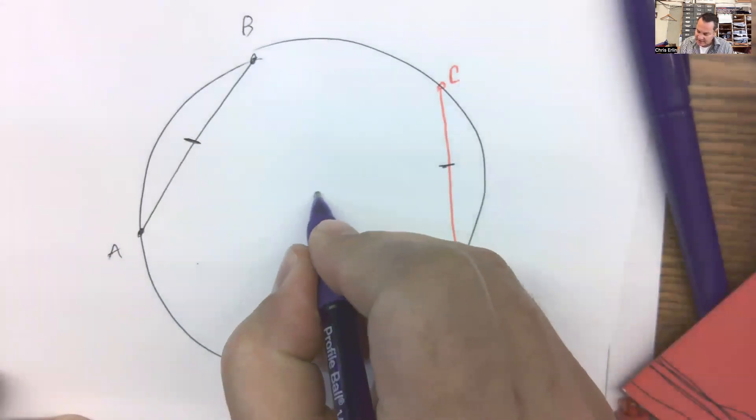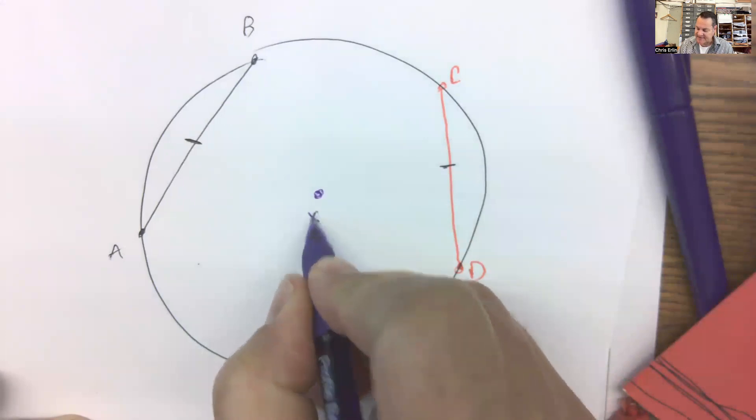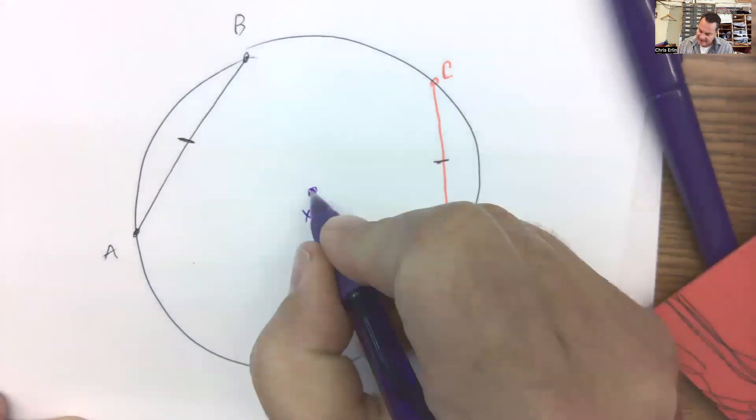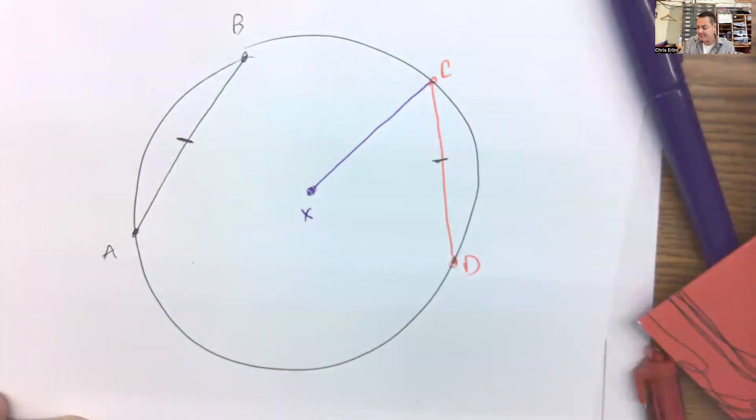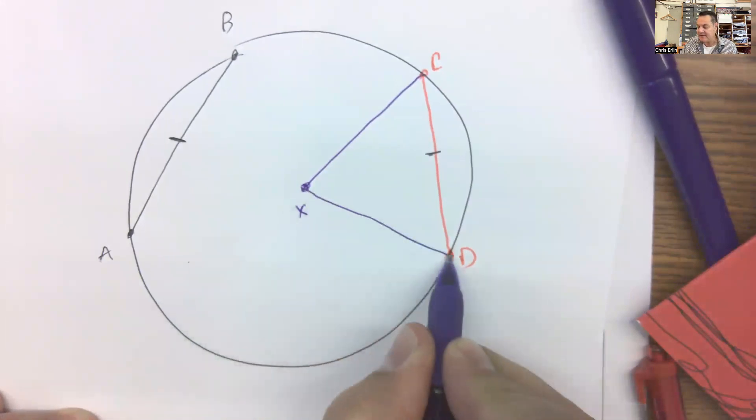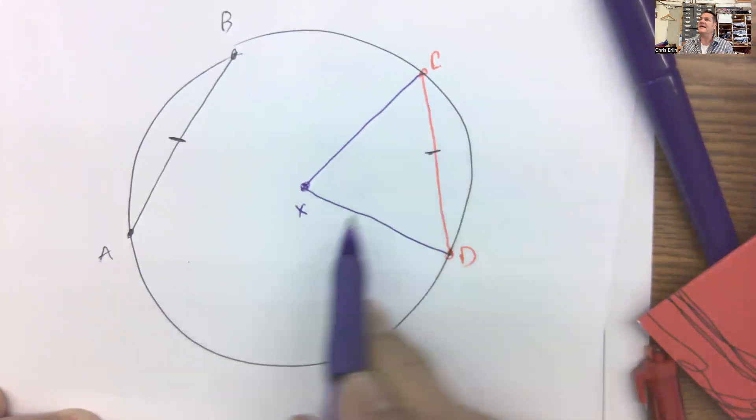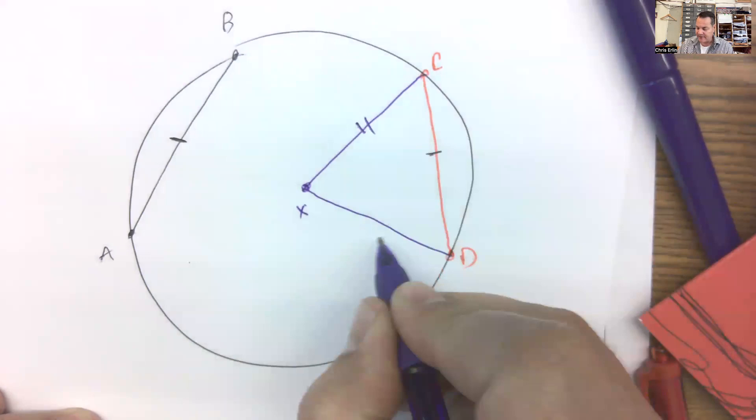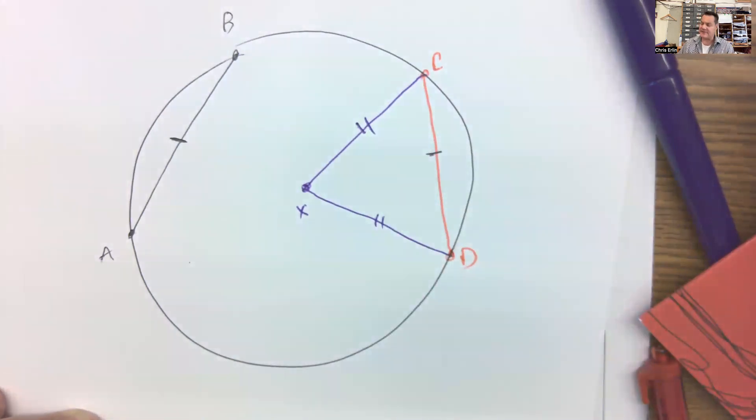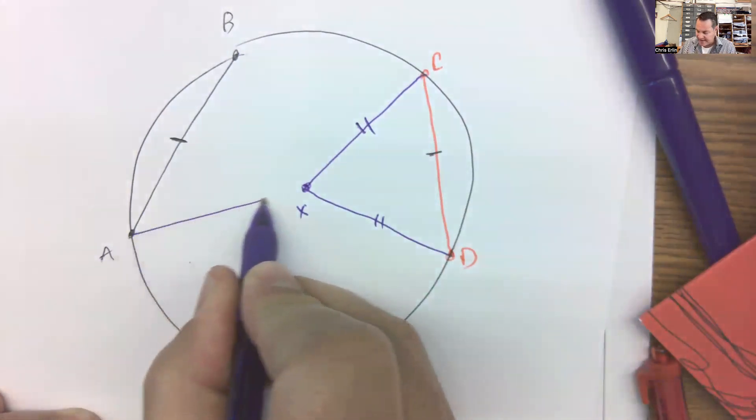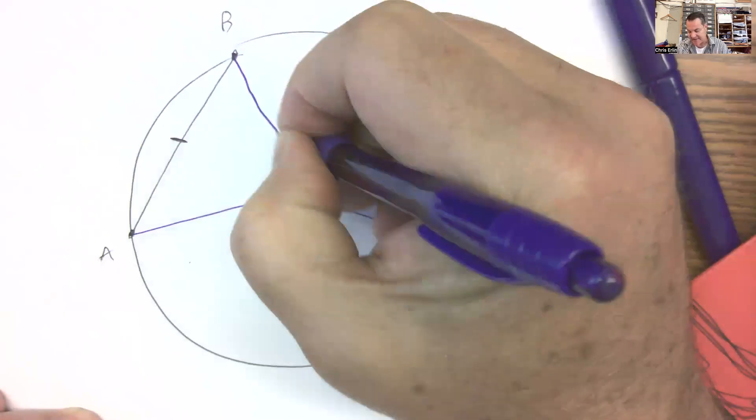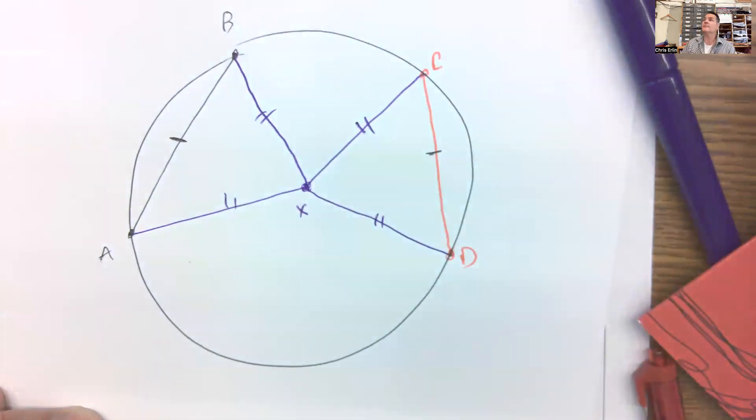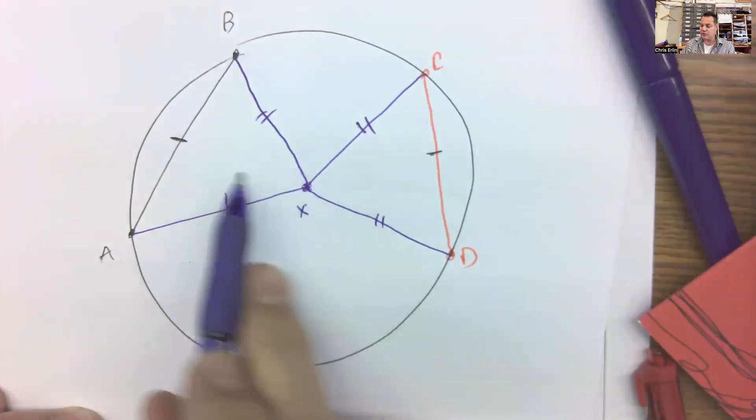So in other words, if I were to find the center of this, let's say there's a circle X, and I connect X to C and X to D, what are these segments, XC and XD? What do we call those? Radii. Good. And they're going to be the same length, right? Because all the radius of a circle are the same length. And wouldn't XA and XB also be the same lengths?